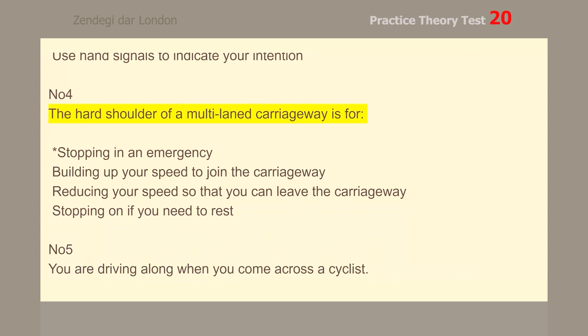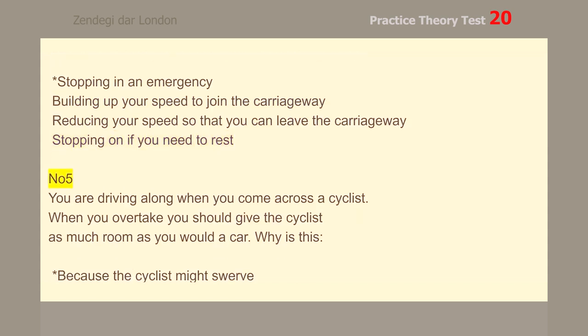Number 4. The hard shoulder of a multi-laned carriageway is for stopping in an emergency.